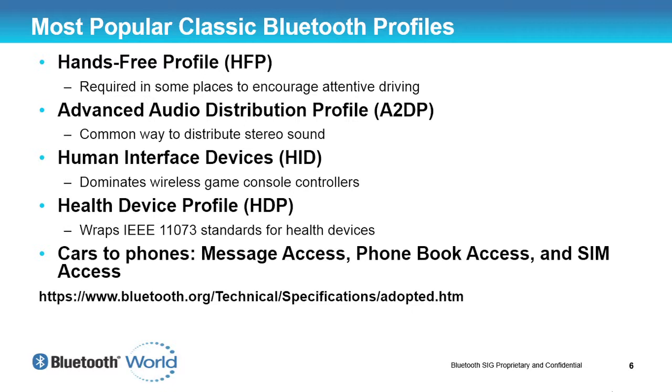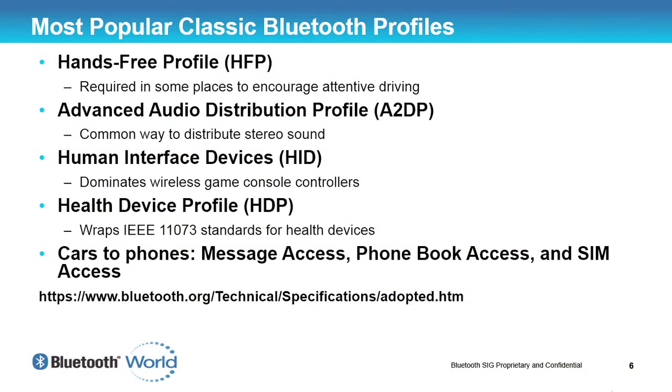There's a whole suite of application profiles for doing access to data in a cell phone from another device — the Message Access Profile, the Phone Book Access Profile, the SIM Access Profile. These are all profiles I use in a car to get access to my phone book. When I'm driving down a French Autobahn at rather too high a speed and my phone rings, the car actually displays who's calling, so I can choose to call them back later or answer. All of those are classic Bluetooth profiles, and the full list is available at bluetooth.org/technical/specification/adopted.htm.